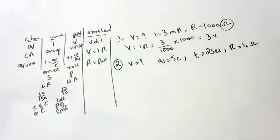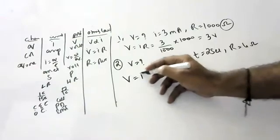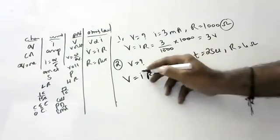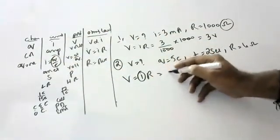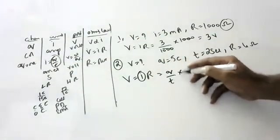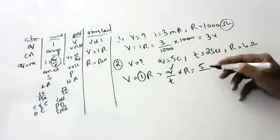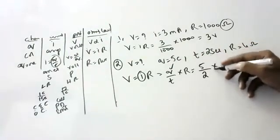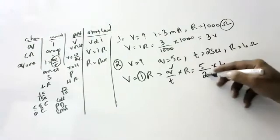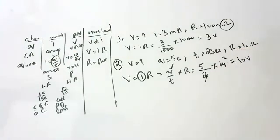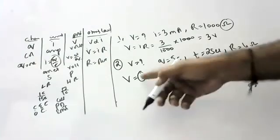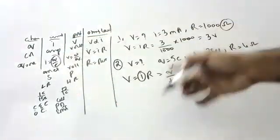Numerical 2: Find the potential when 5 coulombs of charge flows for 2 seconds across a resistance of 4 ohms. Using I = Q/T, then V = IR: V = (Q/T) × R = (5/2) × 4 = 10 volts.